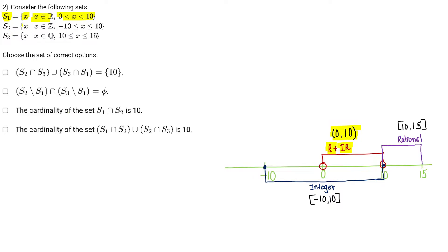S2 are the values of X which are integers, and that's from minus 10 to 10. So basically this blue line denotes my S2 — that is minus 10, minus 9, minus 8, and so on. Only integers are involved in S2, unlike S1. S1 has infinite values; I can have infinite real numbers between two natural numbers, like between 0 and 10.